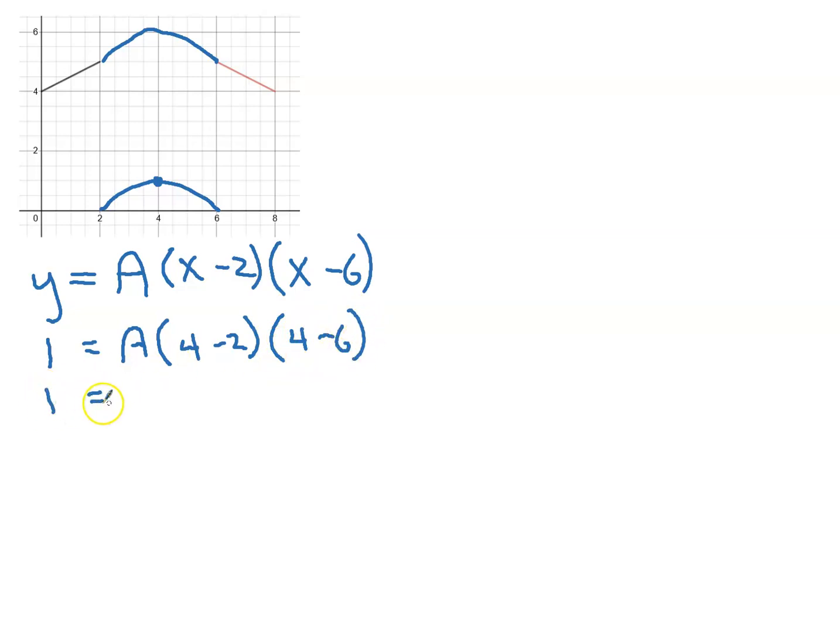1 equals A, 4 take 2 is 2, 4 take 6 is negative 2, 2 by negative 2 is negative 4, and divide both sides by negative 4. And I get A equals negative 1 quarter.